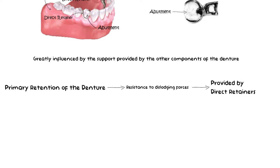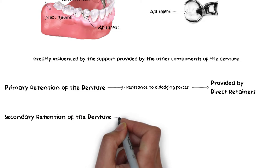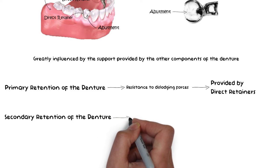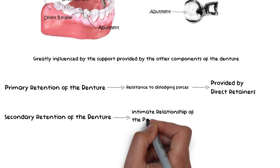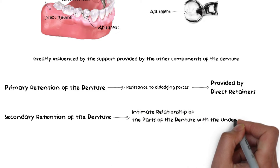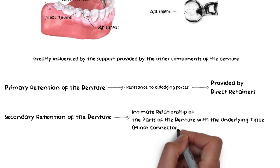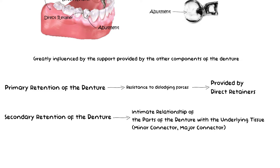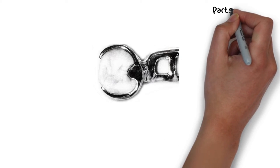This accomplishes the primary retention of the prosthesis — resistance to dislodging forces — provided by the direct retainers. Secondary retention is provided by the intimate relationship of the minor connector contact with the guiding planes and denture bases, and the intimate relationship of the maxillary major connector with the underlying tissues, as discussed in detail in previous lectures. Now let's look into the basic key details of the direct retainers.